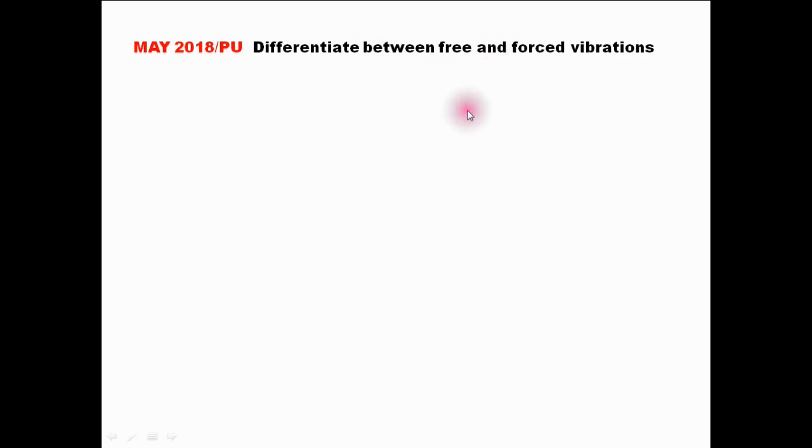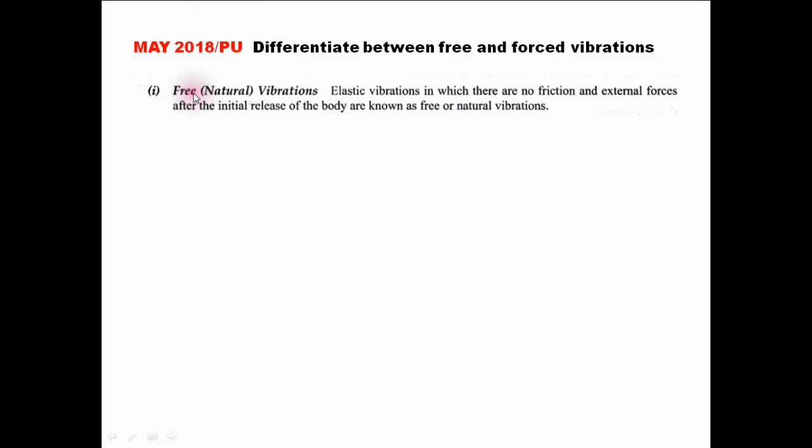Differentiate between free and forced vibrations. First, we define vibration: any motion which repeats itself after an interval of time is called vibration, oscillation, or periodic motion — also described as a to-and-fro motion. All bodies possessing mass and elasticity are capable of producing vibrations. Free or natural vibration: elastic vibrations in which there is no friction and no external force after the initial release of the body are known as free or natural vibrations.